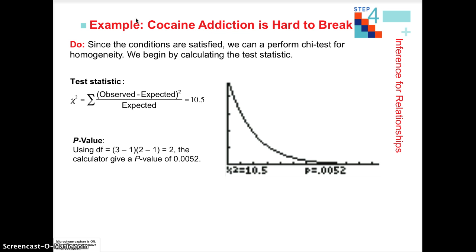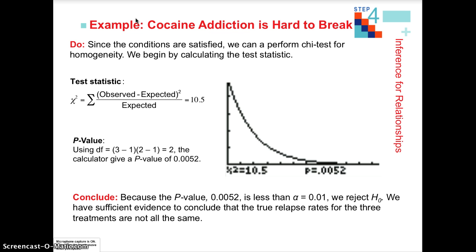Degrees of freedom: we have three different treatments, so 3 minus 1 equals 2; and two groups — relapse or no relapse — so 2 minus 1 equals 1; meaning degrees of freedom equals 2 times 1, which is 2. We either look on the table or use the chi-square CDF function in our graphing calculator. We come up with a very small p-value, which is less than our alpha, so we reject the null hypothesis.